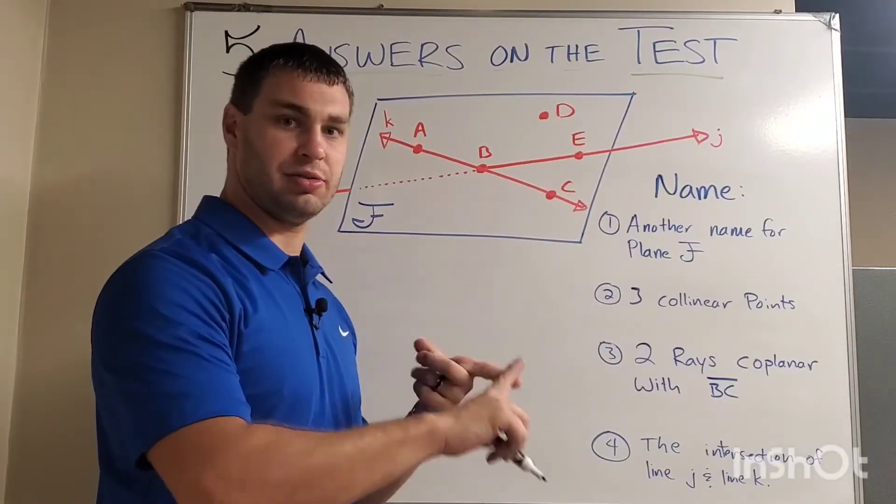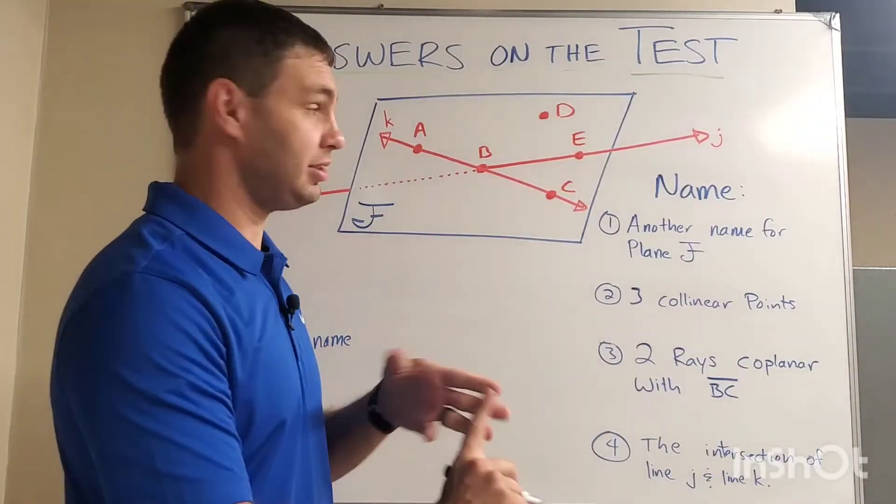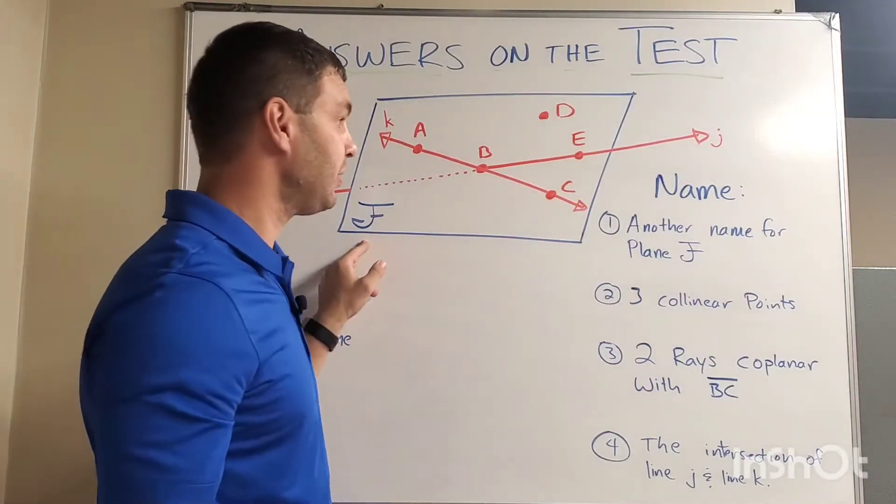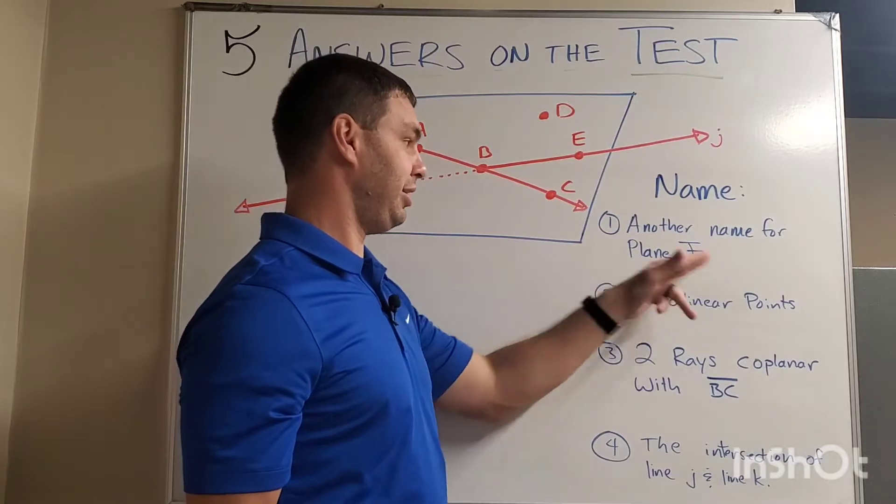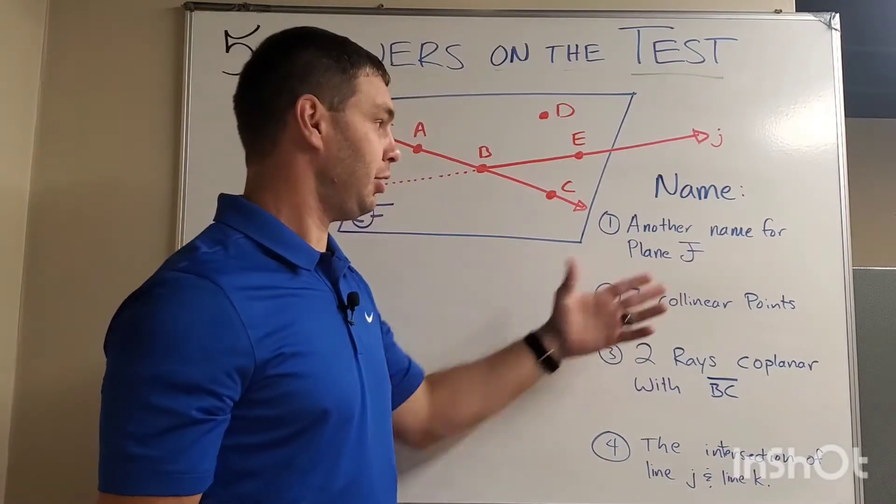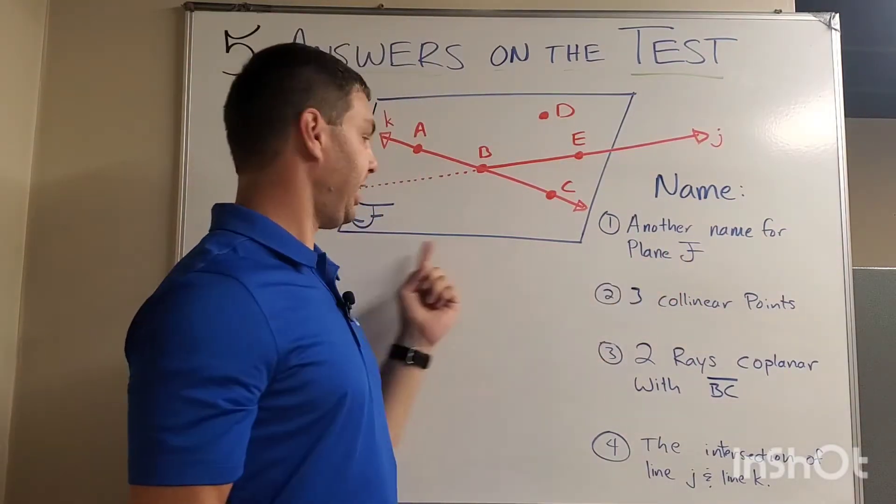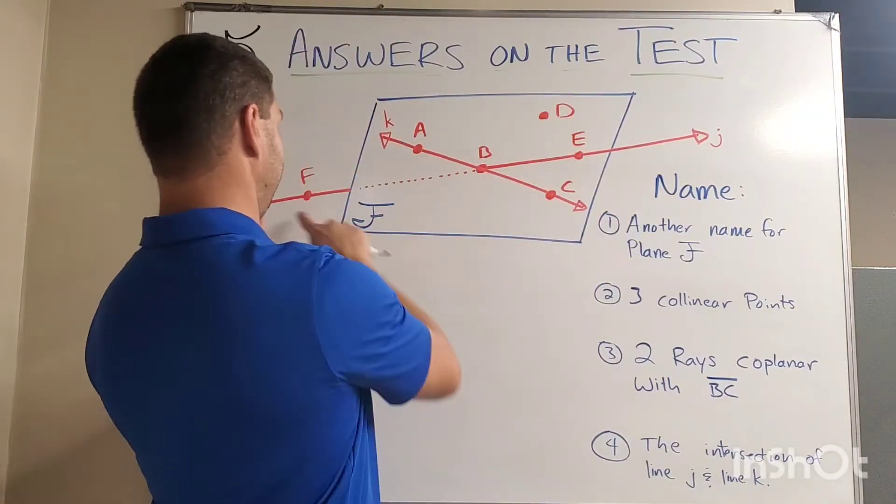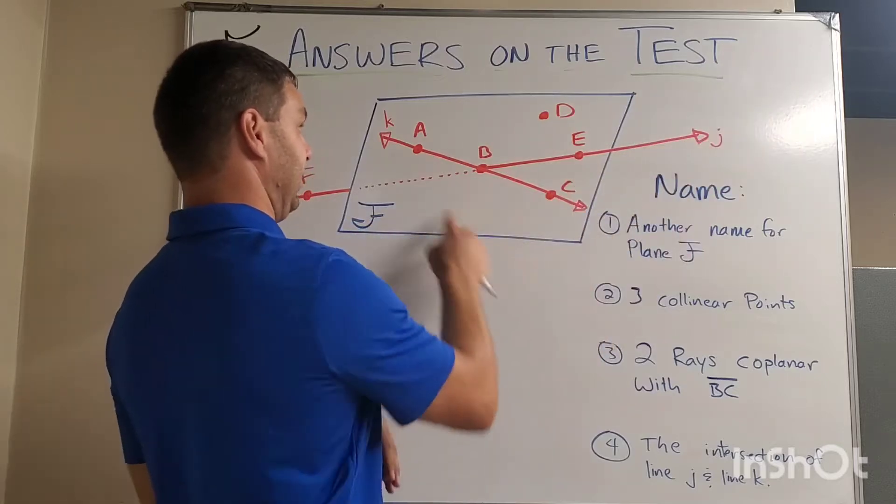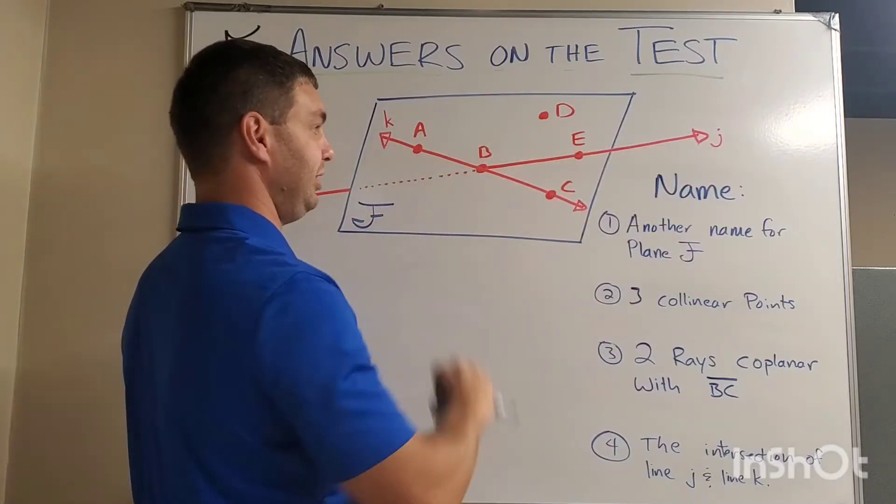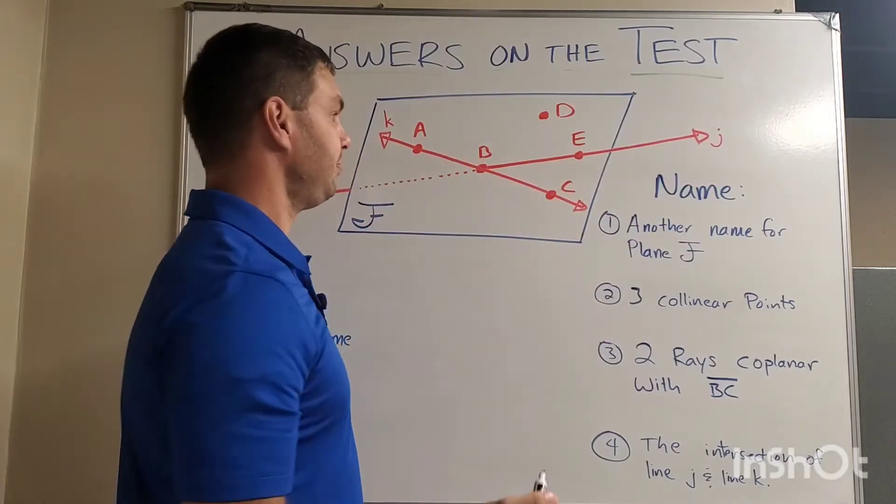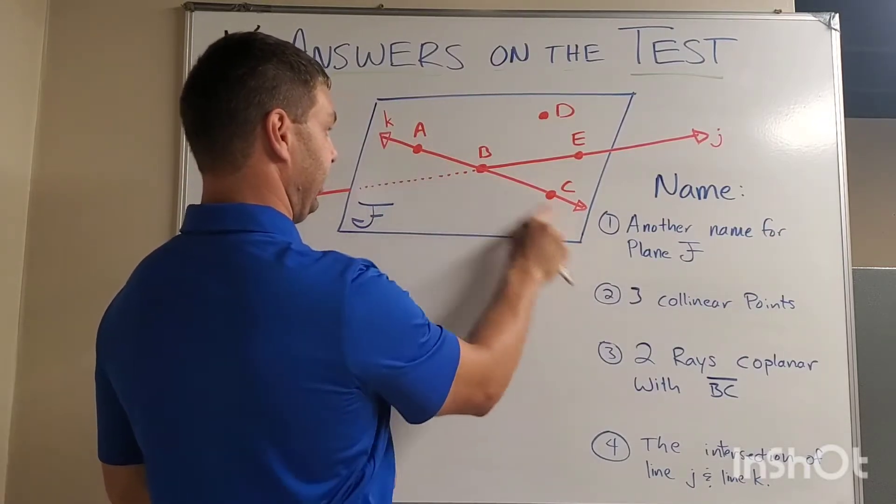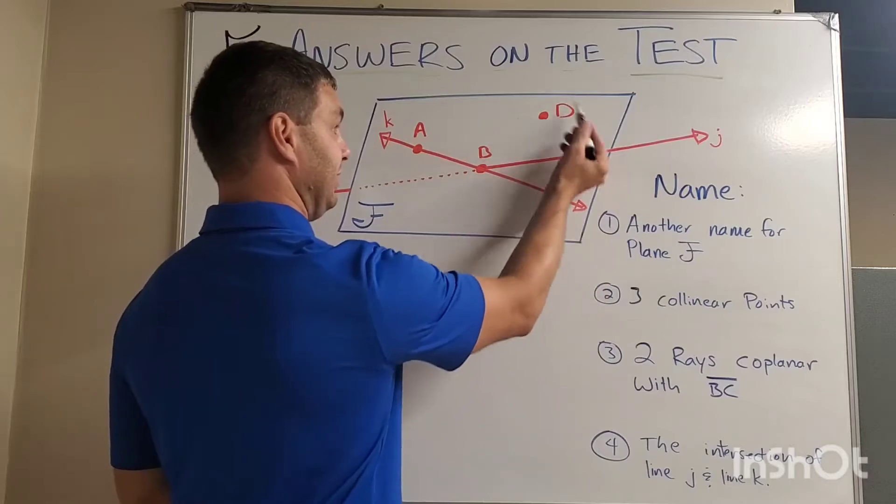First thing I promised you was collinear, coplanar, and intersection problems. Given this plane right here, it's called plane F. Remember, use cursive capital letters to name planes. The first one says name another name for plane F. We can also name planes instead of using that cursive capital letter by using three points that are on the plane. I'm looking here at this plane. I have this kind of line that goes outside of it. I have this line that's on it and I have all these points in here. We have to be a little bit careful.